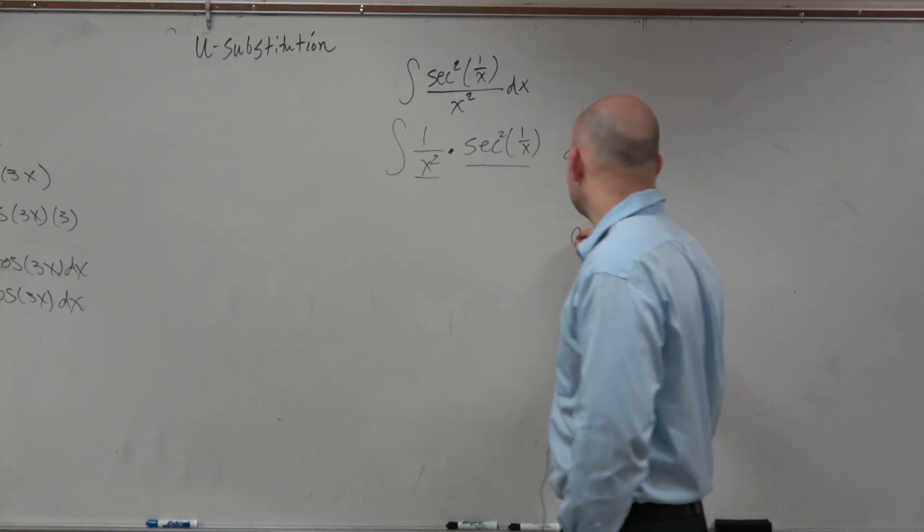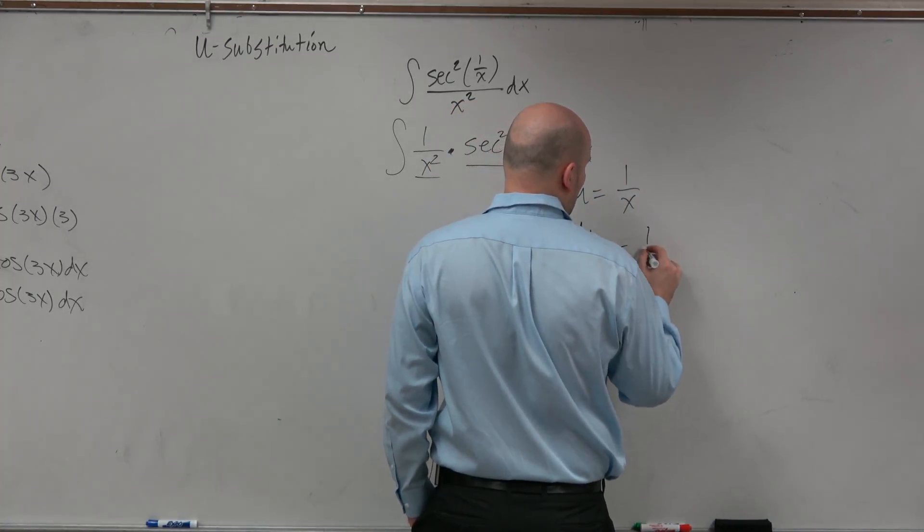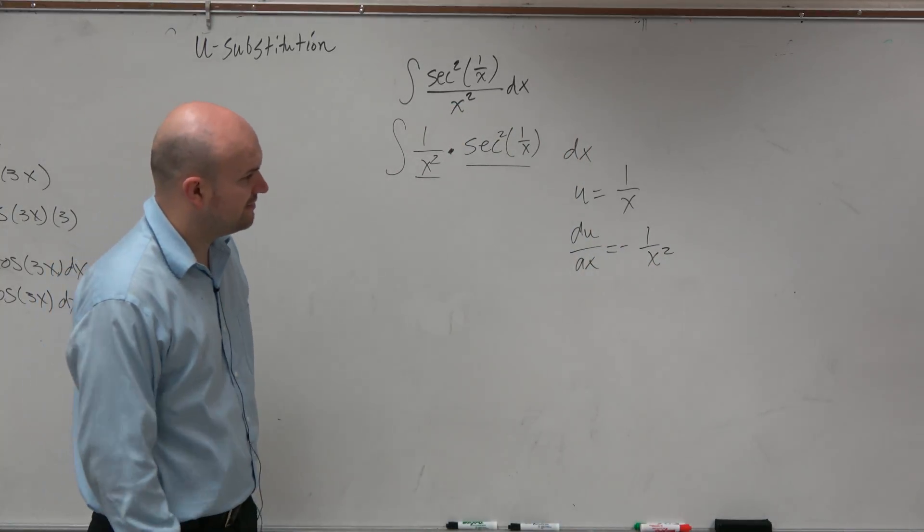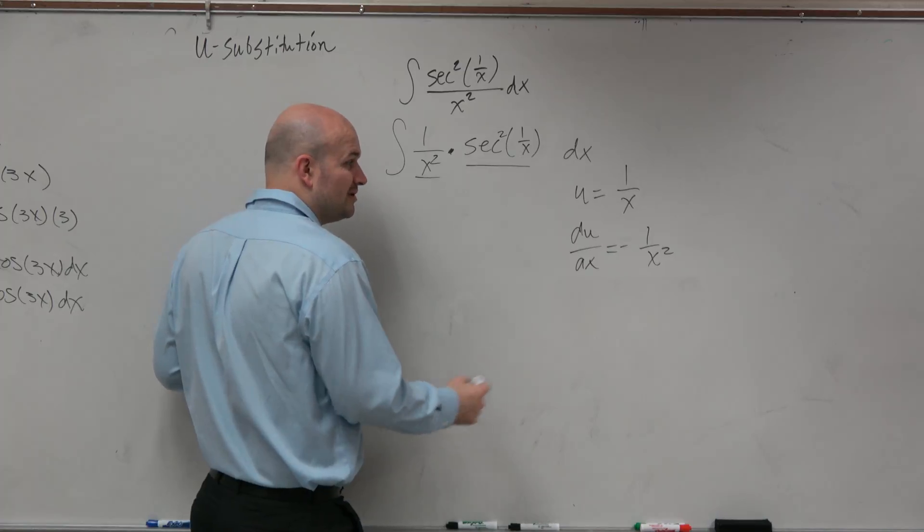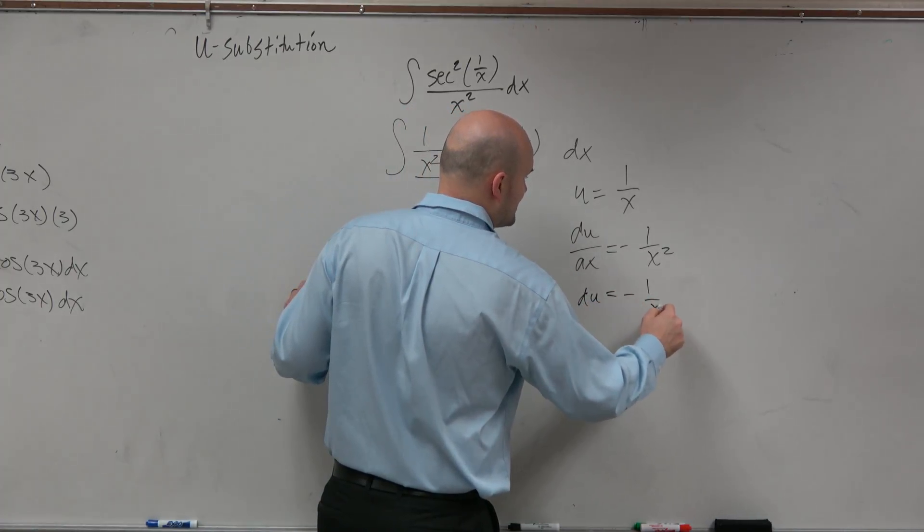So if I make that 1 over x, du over dx equals negative 1 over x squared, right? Or x to the negative second, whatever. So we're looking pretty good here. Du equals negative 1 over x squared dx.